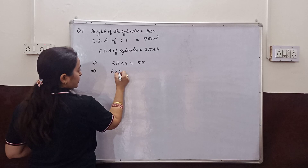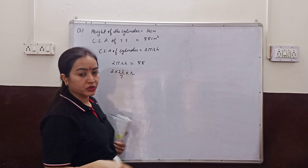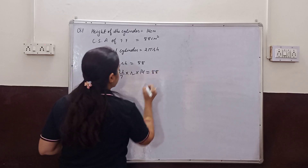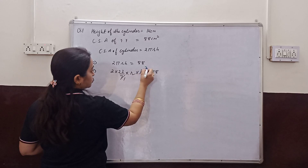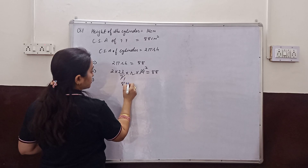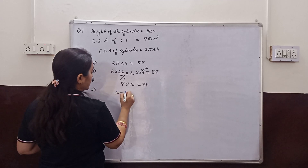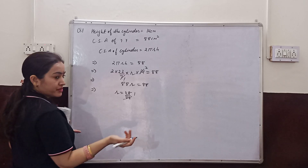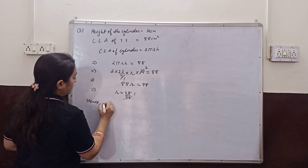Now we have to solve. We use pi equal to 22 by 7. So 2 × (22/7) × r × 14 = 88. The 7s cancel and the 14 gives us 2 × 22 × 2 × r = 88. Solving this, pi r equals 7, so radius r is equal to 1 cm. The 88s cancel out and we get the radius of the cylinder.